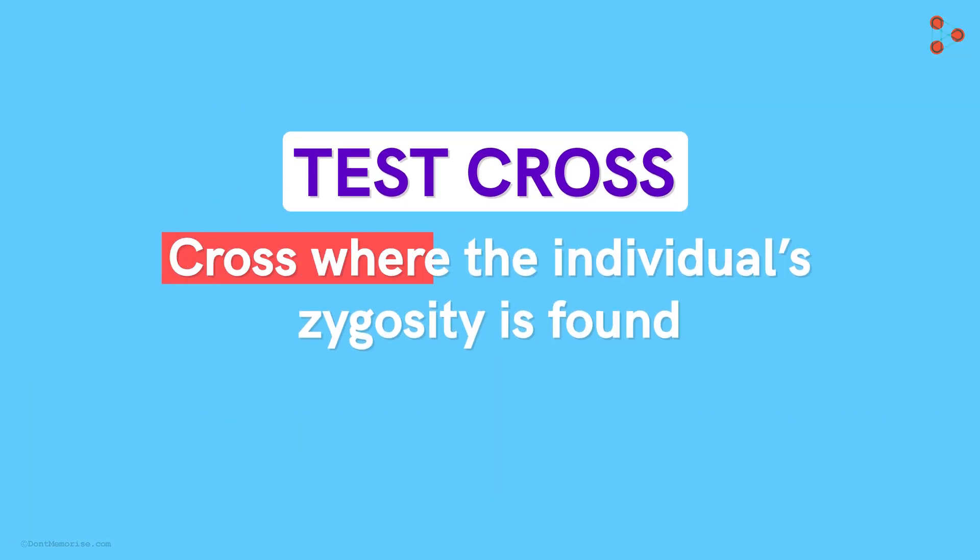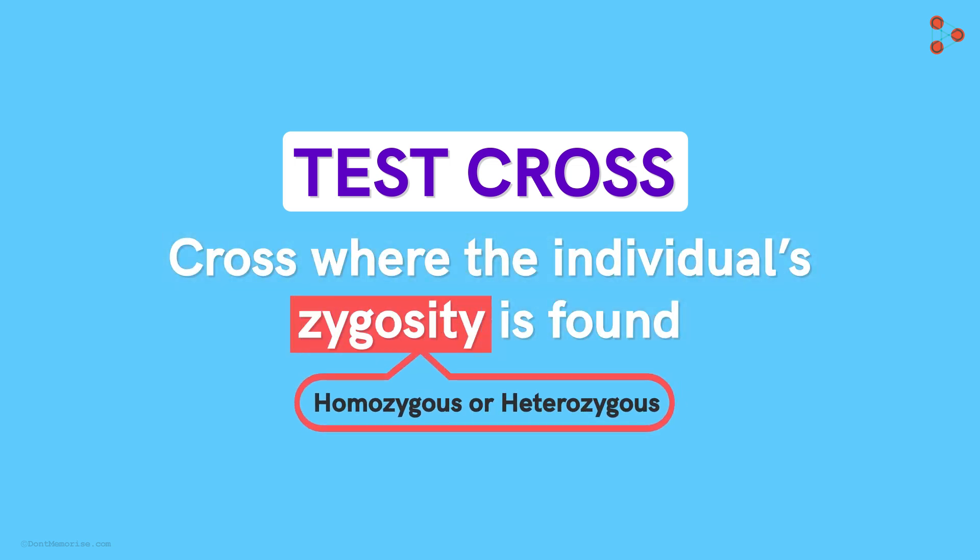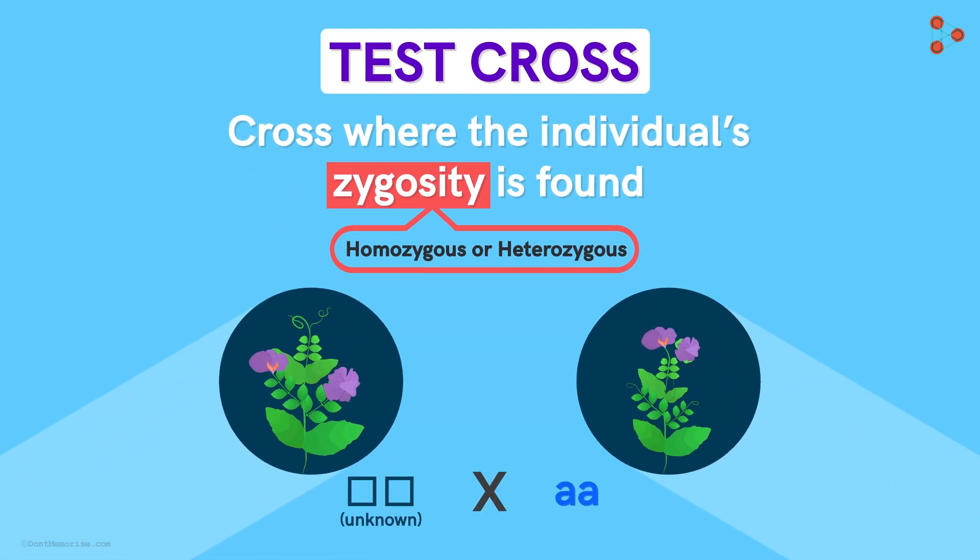It's a cross where the individual's zygosity is found! Zygosity simply means the homozygous or heterozygous nature! It's found by crossing it with a recessive individual!